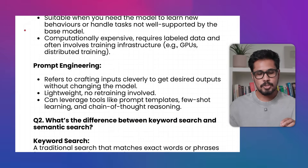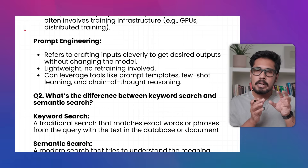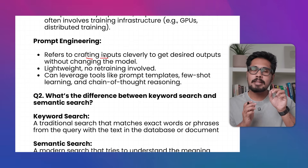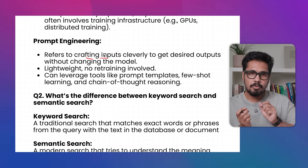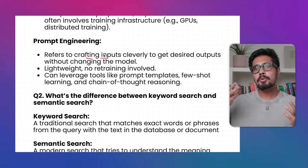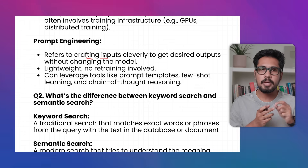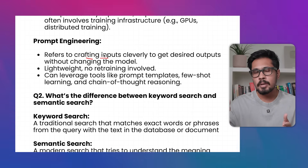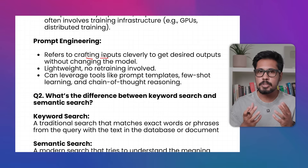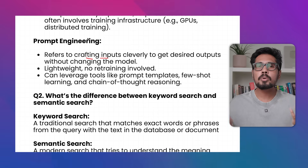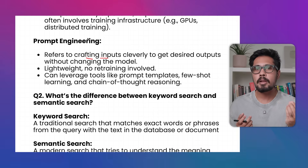Prompt engineering refers to providing the right input. By providing the right input — the right keywords or the right prompt — you are able to get the desired output from your LLM model. Whether you go with prompt engineering or fine-tuning, the purpose is to reduce hallucination levels in your LLM and achieve the desired outcome you expect.